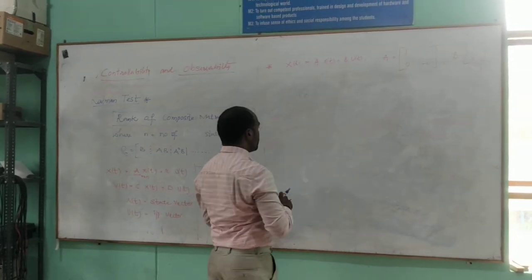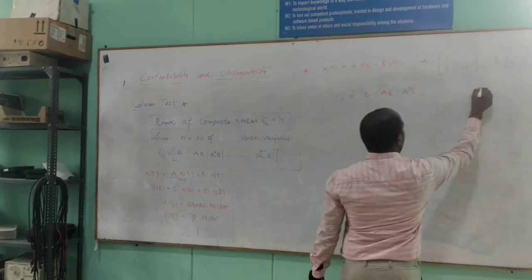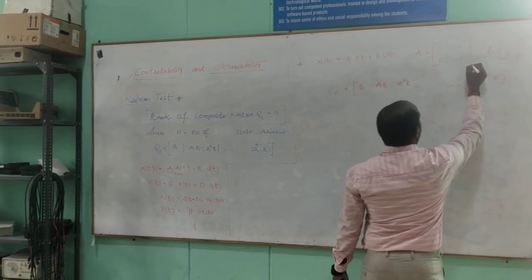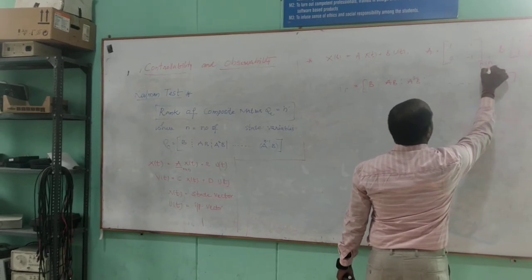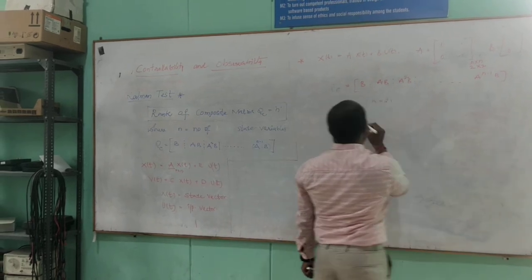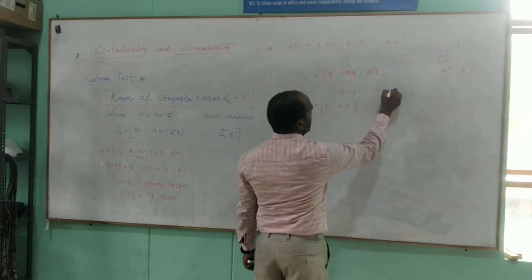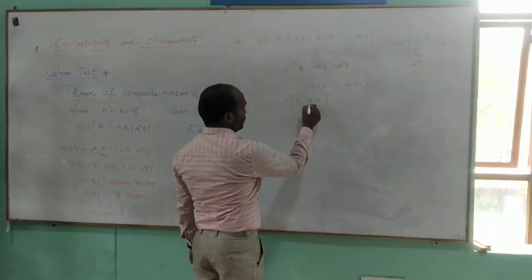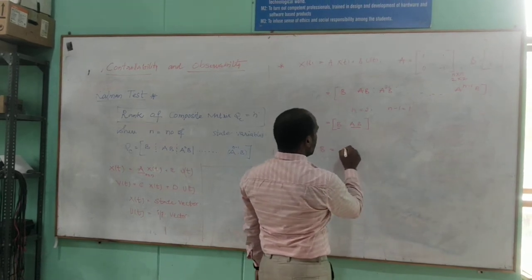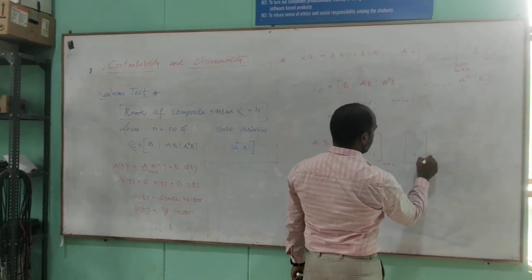So first we derive the composite matrix. The structure is B, followed by AB, followed by A²B, and so on up to A^(N-1)B. The order of matrix A is 2×2, so N equals 2. Therefore, the composite matrix will comprise only two columns: B and AB. We know B already, so we have to find the product AB. A is [1,1; 0,-1] which is 2×2 and B is [1; 0] which is 2×1, so the columns and rows are matching and multiplication is possible.